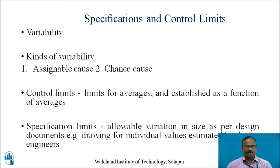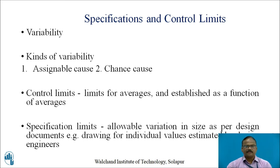In the case of an R chart, which represents range — meaning the minimum and maximum dimension for that particular product — the average of all the ranges gives the limits for averages. Specification limit means the allowable variation in size as per the design document, that is the drawing, for individual values estimated by the design engineer. We can also call this a tolerance.